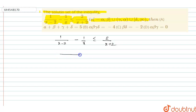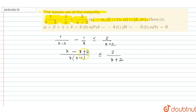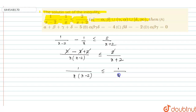Taking LCM, the left side becomes x(x-2) in the denominator, giving us [x - (x+2)] / [x(x-2)] ≤ 2/(x+2). After cancellation, this simplifies to 1/[x(x-2)] ≤ 1/(x+2).